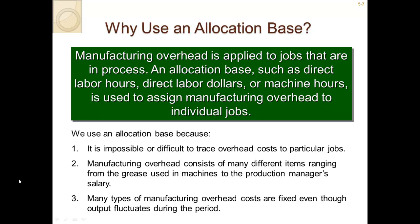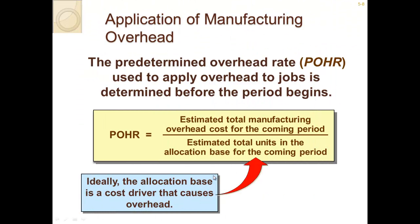The application of manufacturing overhead uses a predetermined overhead rate. This is used to apply overhead to jobs before the period begins. Construction companies bidding for a project must apply a predetermined overhead rate, which may not be their actual rate — they have to estimate. The formula is: estimated total manufacturing overhead cost for the coming period divided by estimated total units of the allocation base for that period. Ideally, the allocation basis is a cost driver that causes overhead, like labor hours or machine hours.